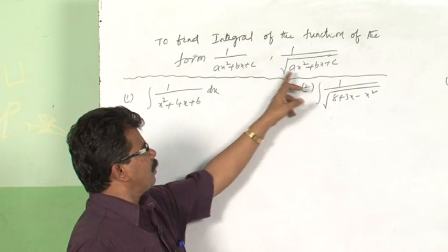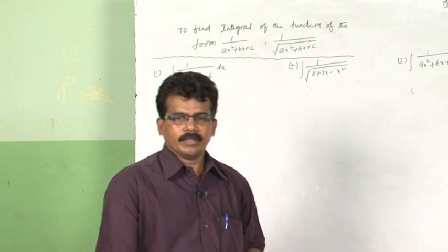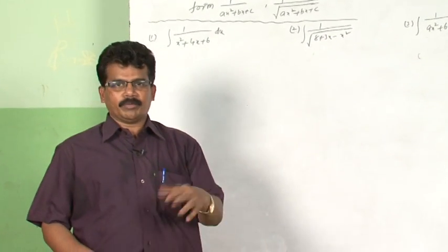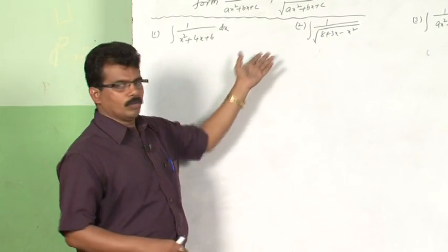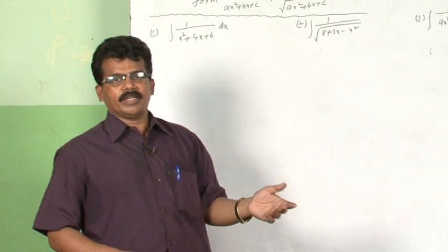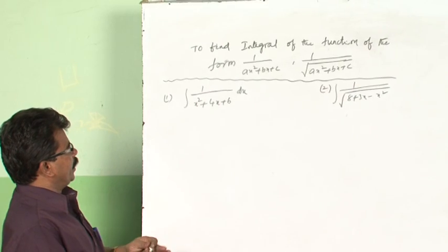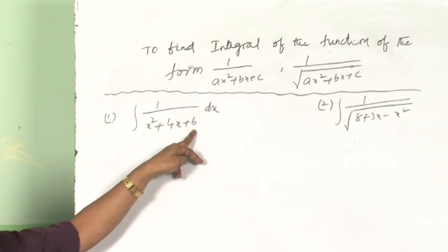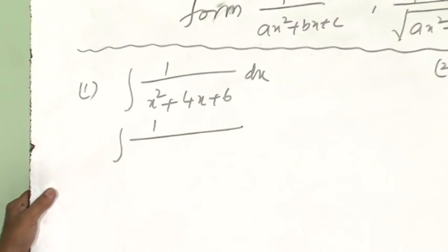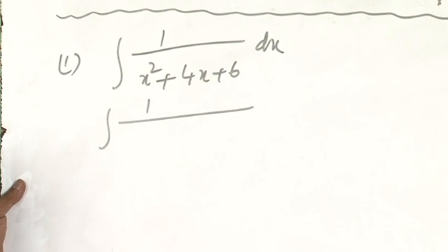Observe here: in the denominator or inside the root, we have a quadratic polynomial. So how to solve this type of function? We use either factorization method or the completion of squares technique studied in class 10, to reduce this quadratic polynomial into known forms like x square plus a square or x square minus a square, and then we apply the formula. Just see the first question: integral 1 by x square plus 4x plus 6.